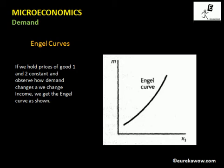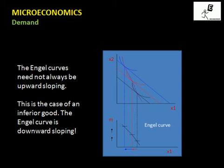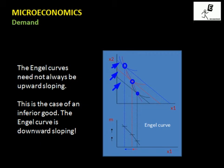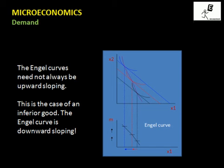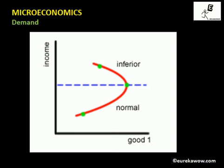For inferior goods, as income increases the quantity demanded actually falls. As income increases from M1 to M2 to M3 the budget constraint shifts outwards, and the optimal bundles show a decrease in the quantity demanded of good one as income rises. The Engel curve for an inferior good is therefore downward sloping. So, for inferior goods the Engel curves are downward sloping, and for normal goods the Engel curves are upward sloping.